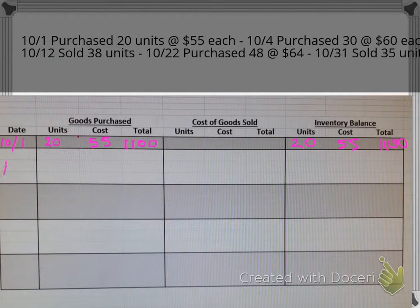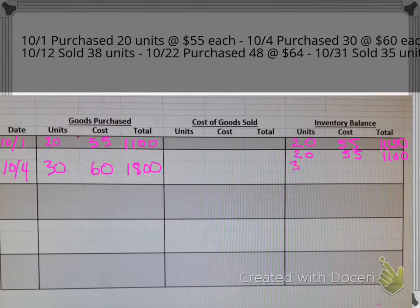Then on the 4th, we buy 30 more units at $60, so that would be $1,800. Let's carry down what we already had in inventory. That's going to help us keep track. We had 20 units at $55, which is $1,100, and then we're going to add to that the new purchases of 30 units at $60, which is $1,800.